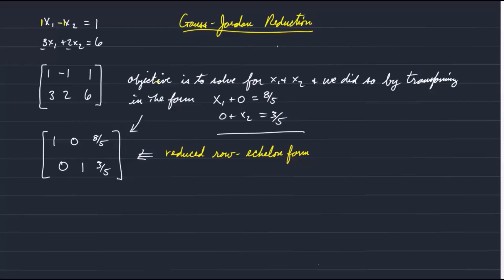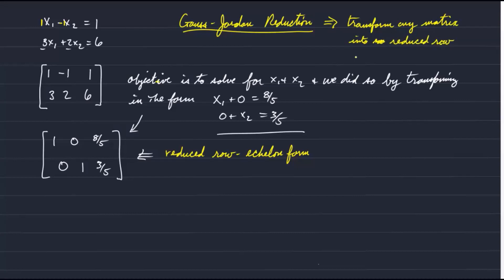So what Gauss-Jordan reduction does — and I'll show you in a minute — is to transform any matrix into reduced row echelon form. That's what Gauss-Jordan reduction is about. So now let's define what we mean by reduced row echelon form.